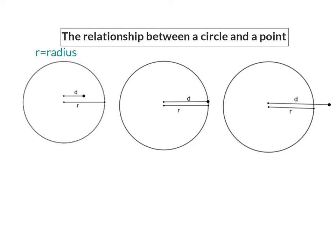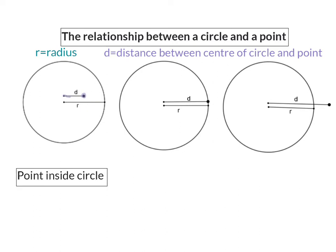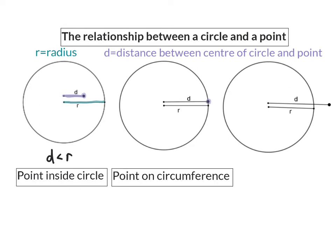For this we need to know the radius of the circle and the distance between the center of the circle and the given point. In our first sketch the point is clearly inside the circle, and here the distance between the center and this point is shorter or smaller than the radius of the circle, so we need to remember that the distance is smaller than the radius. If we have a look at our second sketch, the point is now on the circumference of the circle. When this happens the distance between the center of the circle and the given point will be the same length as the radius, so we can write this down saying the distance is equal to the radius.